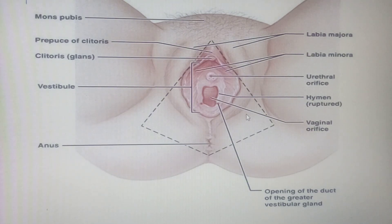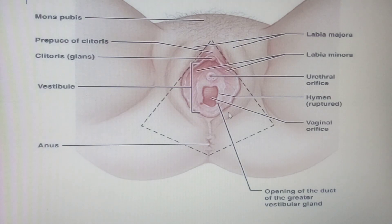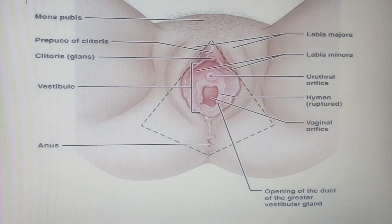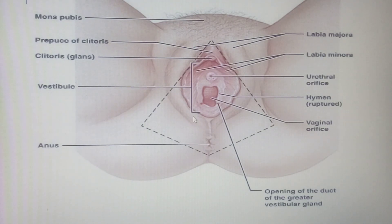The labia majora develops from what we call genital swellings or labioscrotal swellings. In between the two labia majora is a cleft known as the pudendal cleft.